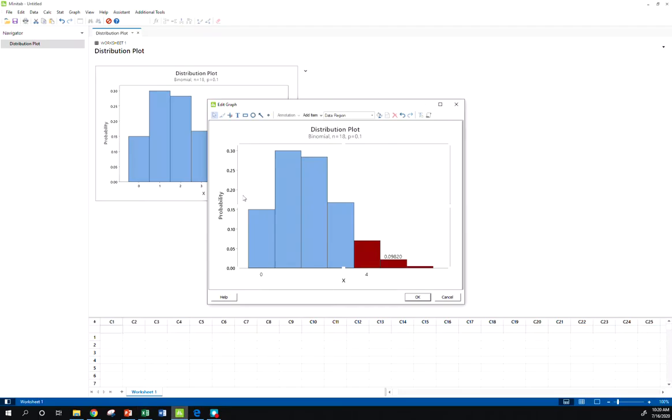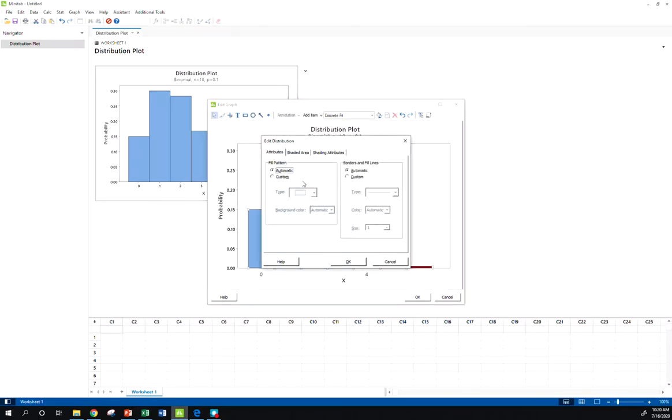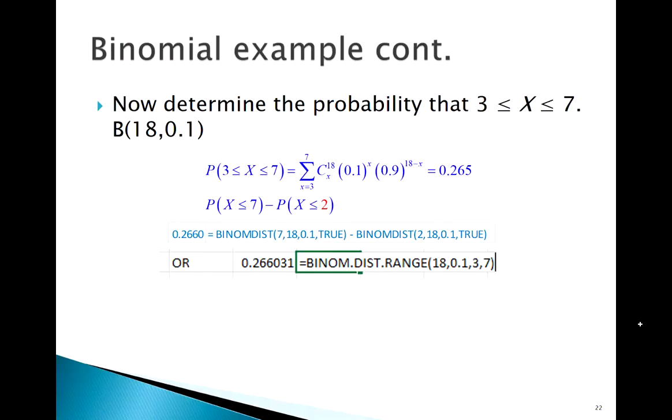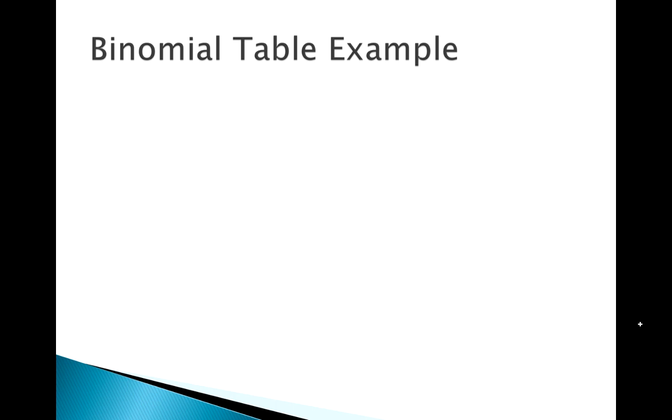It should also give us the same answer if we go to Minitab and have it highlight a middle area. So our middle area between 3 and 7 looks like this. So that should match up with whatever we found in Excel. Alright, so lots of different ways to solve these problems. And I think trying in different ways really helps you understand exactly what's going on.